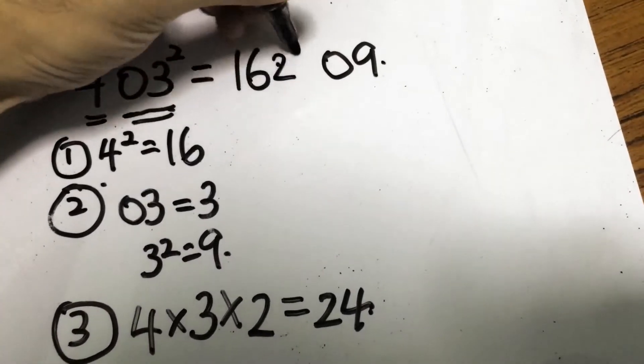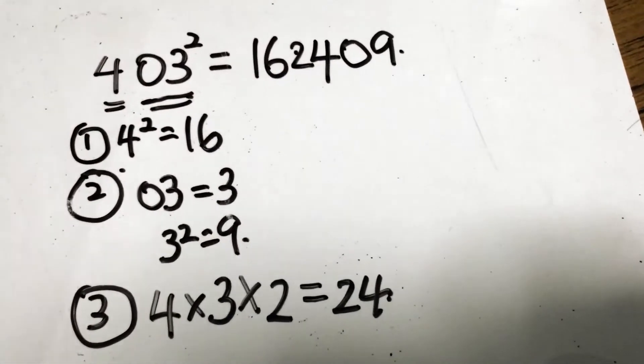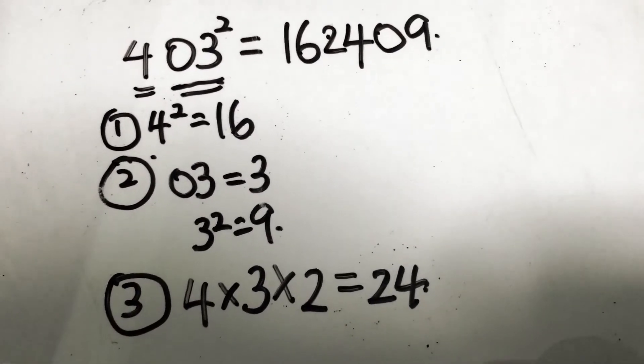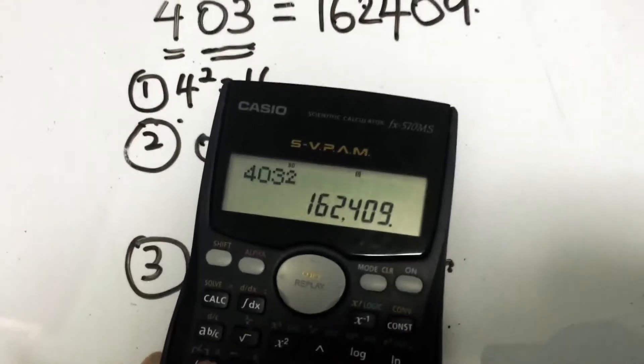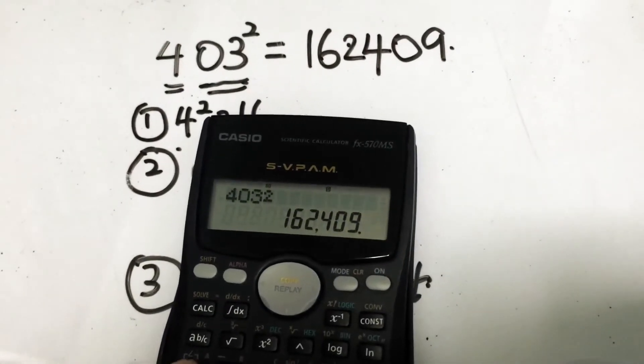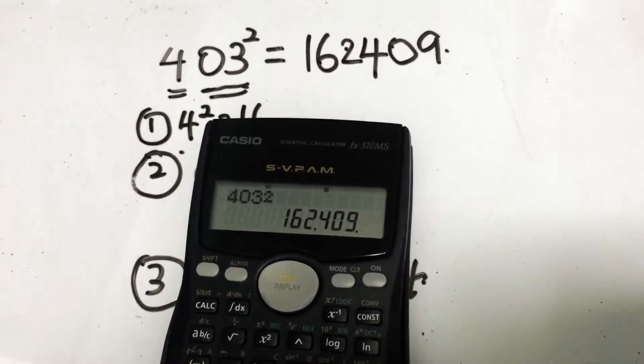So the final answer for 403 squared is actually equals to 162409. Here is a look checking into the calculator and you can see that this is the correct answer 162409.